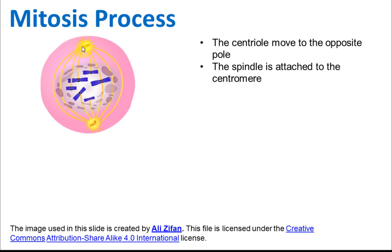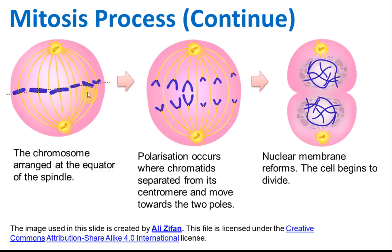The centrioles move to the two poles, and the spindles grow and move to the centromere. After that, the chromosomes arrange themselves in the middle of the cell, which is called the equator of the cell. Then polarization occurs, where the chromatids separate from the centromere and move toward the two poles.